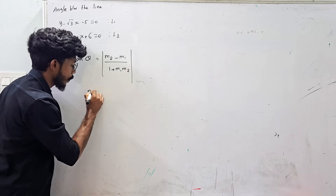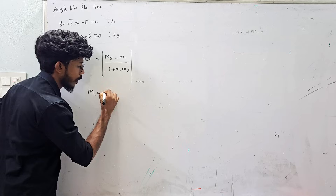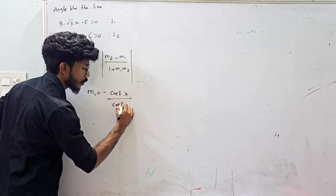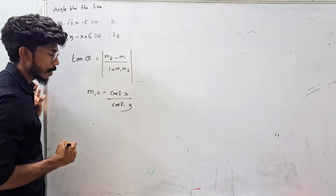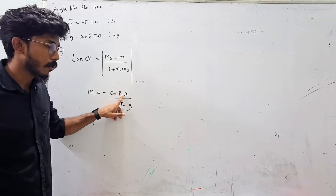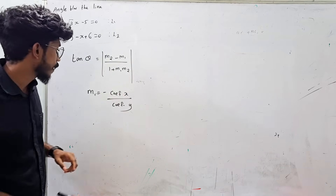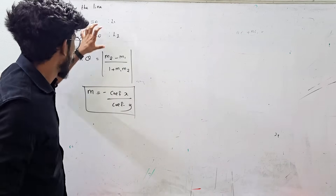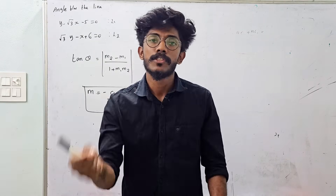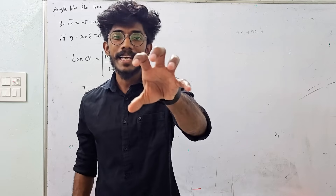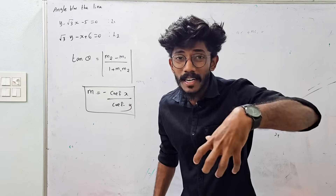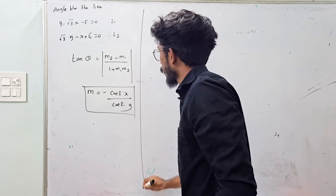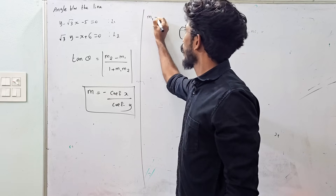The slope formula is: m equals minus of the coefficient of x divided by the coefficient of y. This is the slope formula — m equals minus the coefficient of x divided by the coefficient of y. So if you have the equation, what is m1 here?